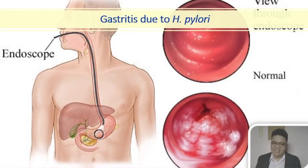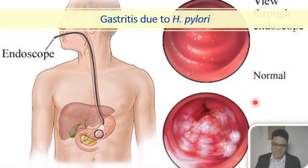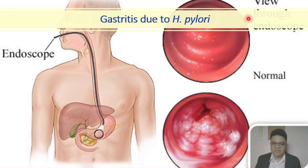This slide shows gastritis due to H. pylori. The stomach was visualized using an endoscope — your EGD. You can see the normal surface of the stomach compared to the surface with H. pylori infection, showing whitish discoloration representing a significant amount of pus, indicative of the presence of infection and inflammatory processes occurring inside.